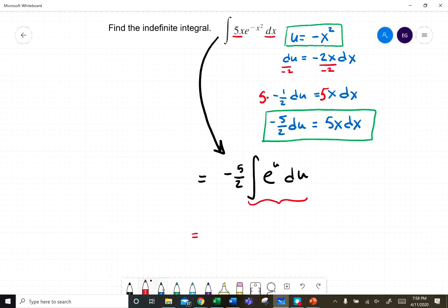So that should be negative 5/2 e to the u plus C.